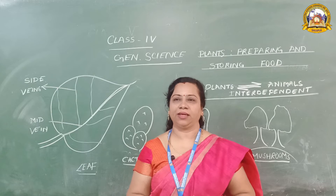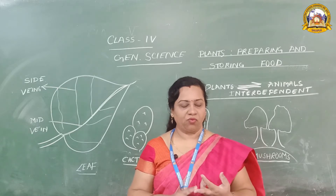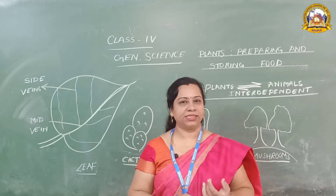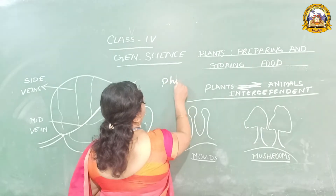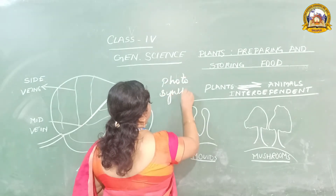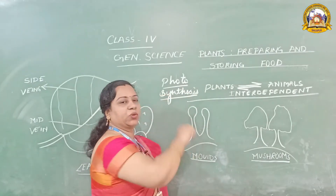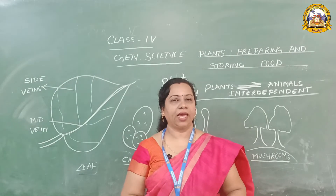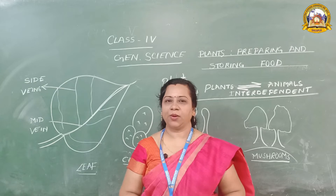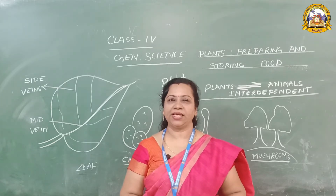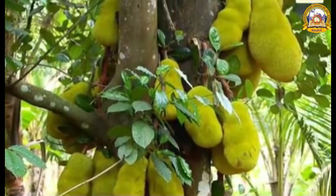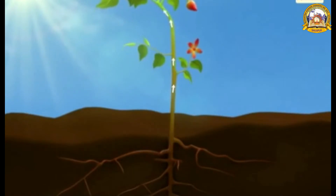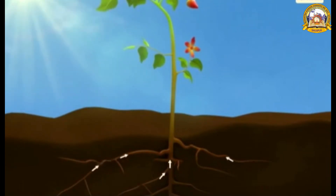Green leaves can make their own food with the help of air, water and sunlight, and give out oxygen and food. This process is known as photosynthesis. Plants are special because they do not have to look for food as they make their own food. They take up nutrients from the soil through their roots and the stems carry them up to the leaves, which ultimately prepare the food.